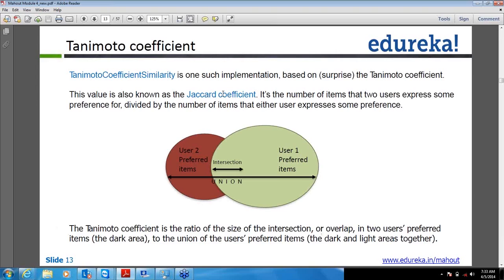It is actually related with the log likelihood similarity also, which last time if you remember we have used in the case where preference values are not there. So what log likelihood similarity is - it's a little bit related to the statistical part where you create your own hypothesis. Let's assume you wanted to analyze some data, so for that in statistics there are certain rules before starting.